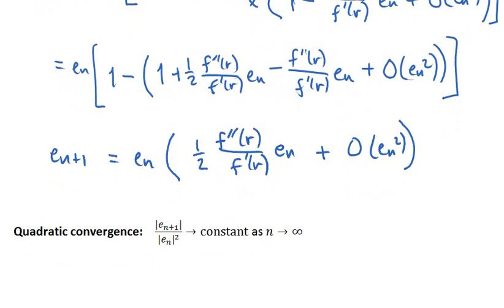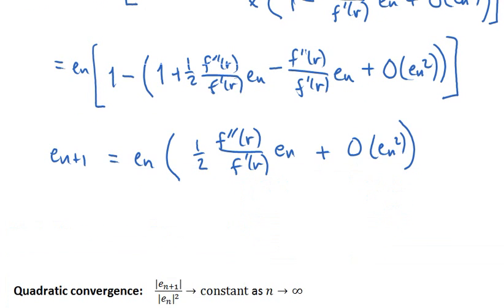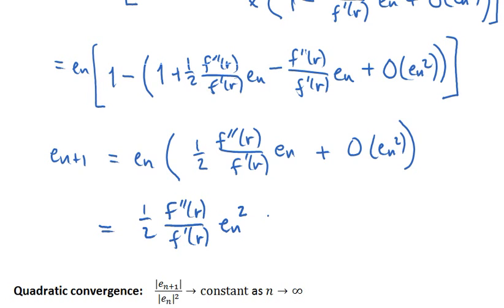Finally, this is going to get simpler. We end up with e_{n+1} equal to e_n times — the one minus one cancels out — and I have plus one-half minus one, so that's minus a half, but there's a minus sign in front of it. So I get plus one-half f''(r) over f'(r) times e_n plus all the higher-order terms. Which means e_{n+1} is one-half times this constant — this depends only on the root r — times e_n squared plus smaller terms.